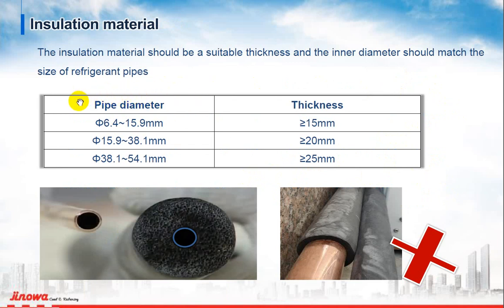For copper pipe diameter from 6.4 to 15.9 millimeters, your insulation thickness must be 15 millimeters or more.